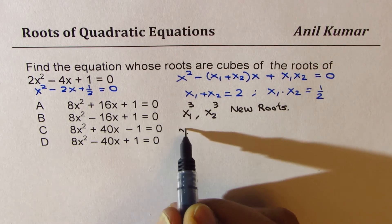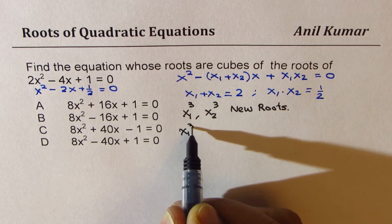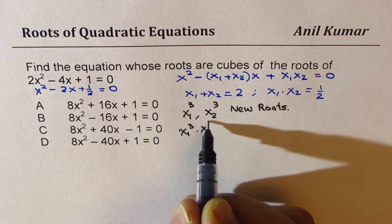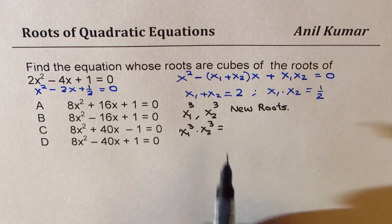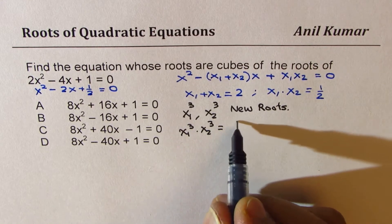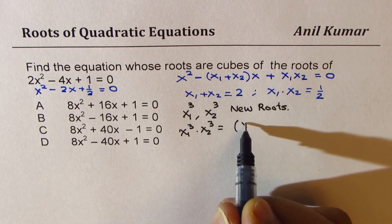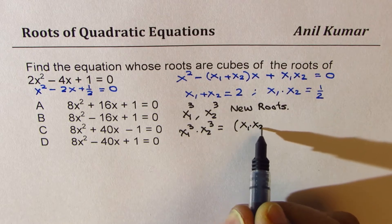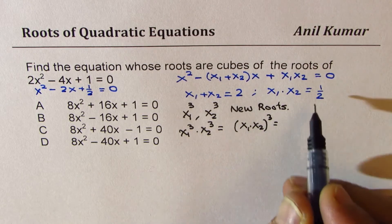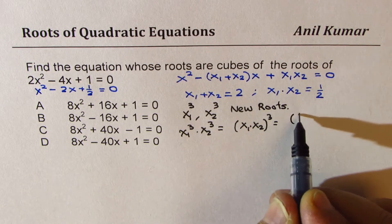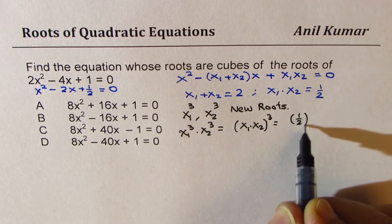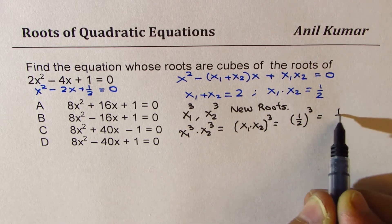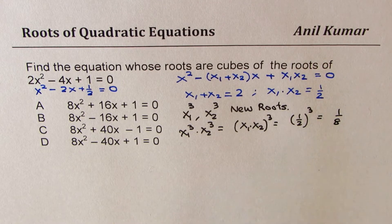The product of x1 cubed and x2 cubed will be the cube of the product of x1 and x2, which is the same as one half cubed, or 1 over 8.